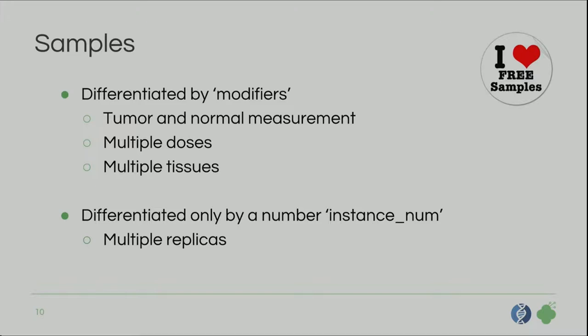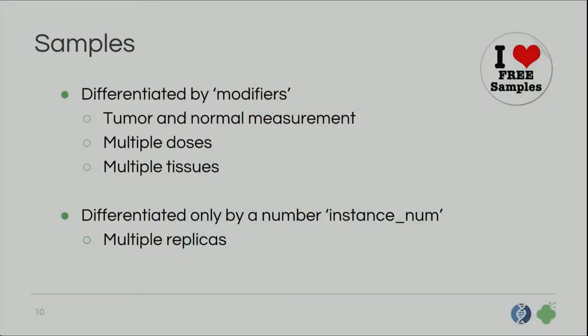Then there are samples — two kinds. One kind involves multiple observations for the same concept and patient, not differentiated by time. For example in TCGA, I have a tumor and a normal sample, or multiple doses of the same drug given to the same patient, or observations for multiple tissues. These can be modeled using modifiers as I2B2 has them — you hang an extra modifier on the observation to make them unique. In cases where nothing differs except that it's a replica, we have an instance number column that we can increment.